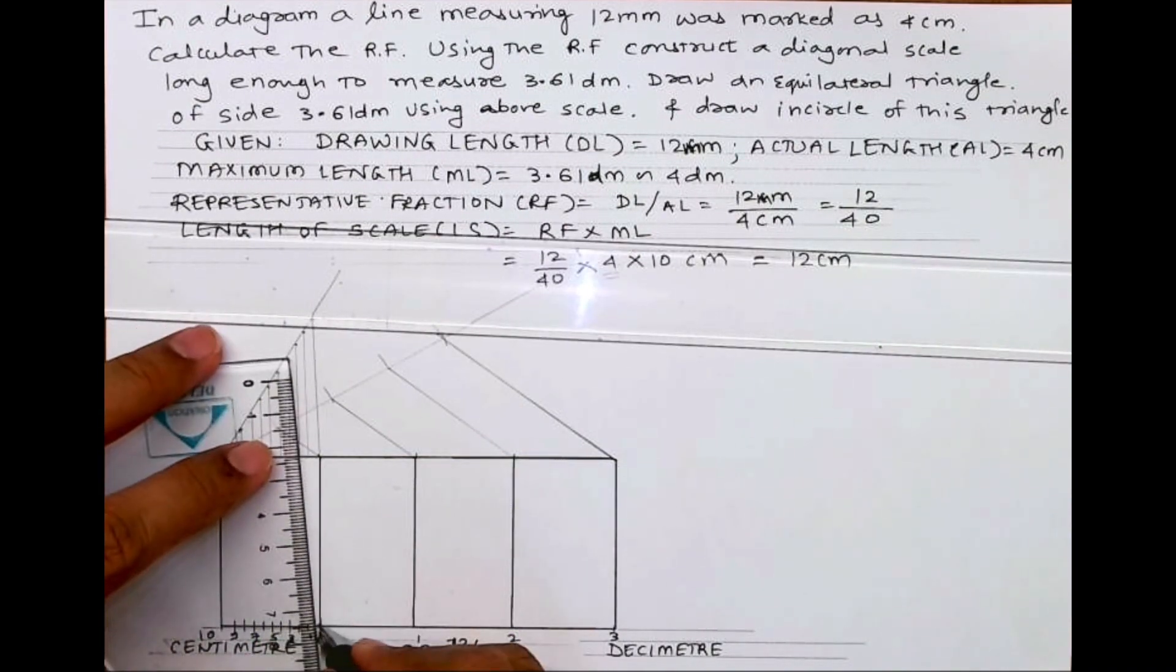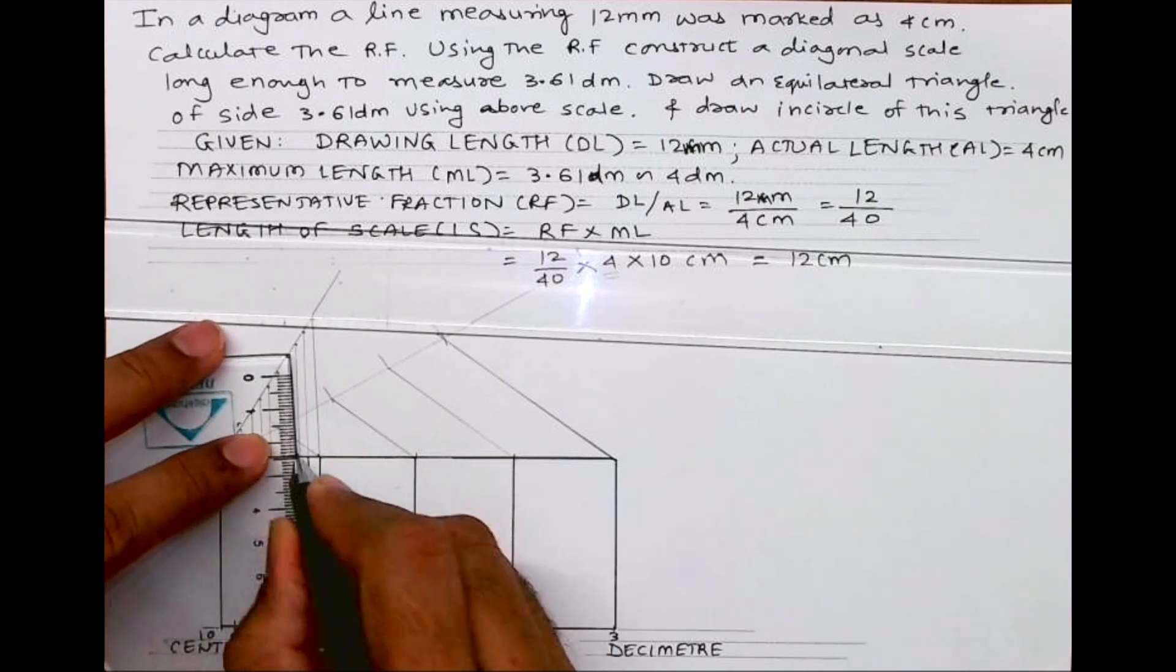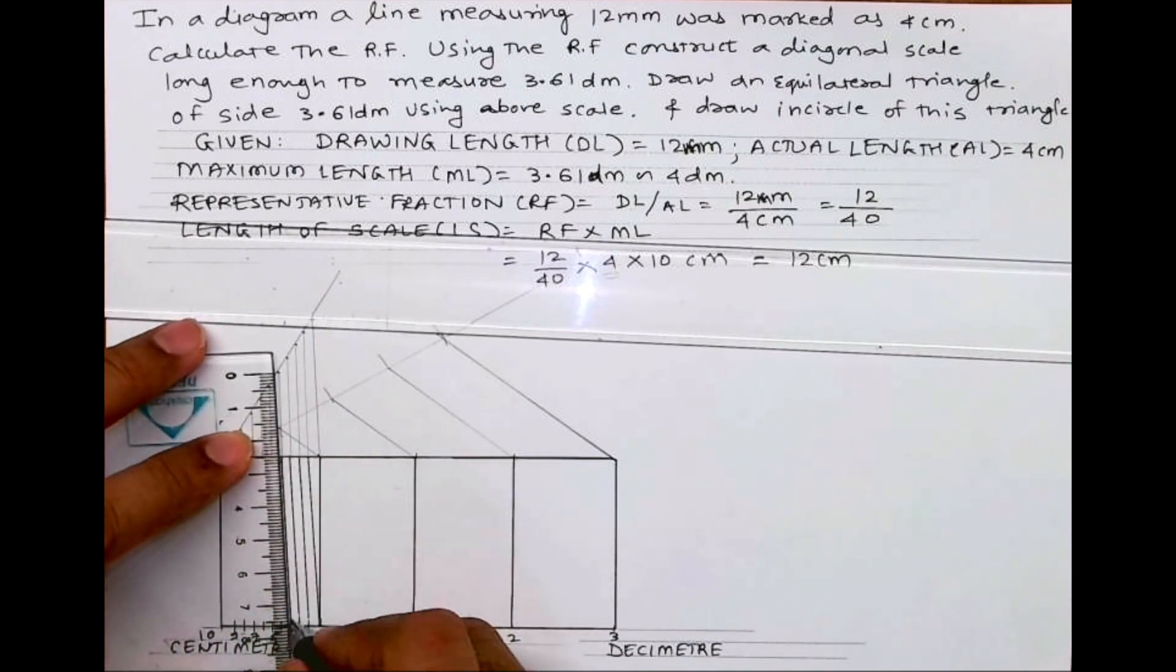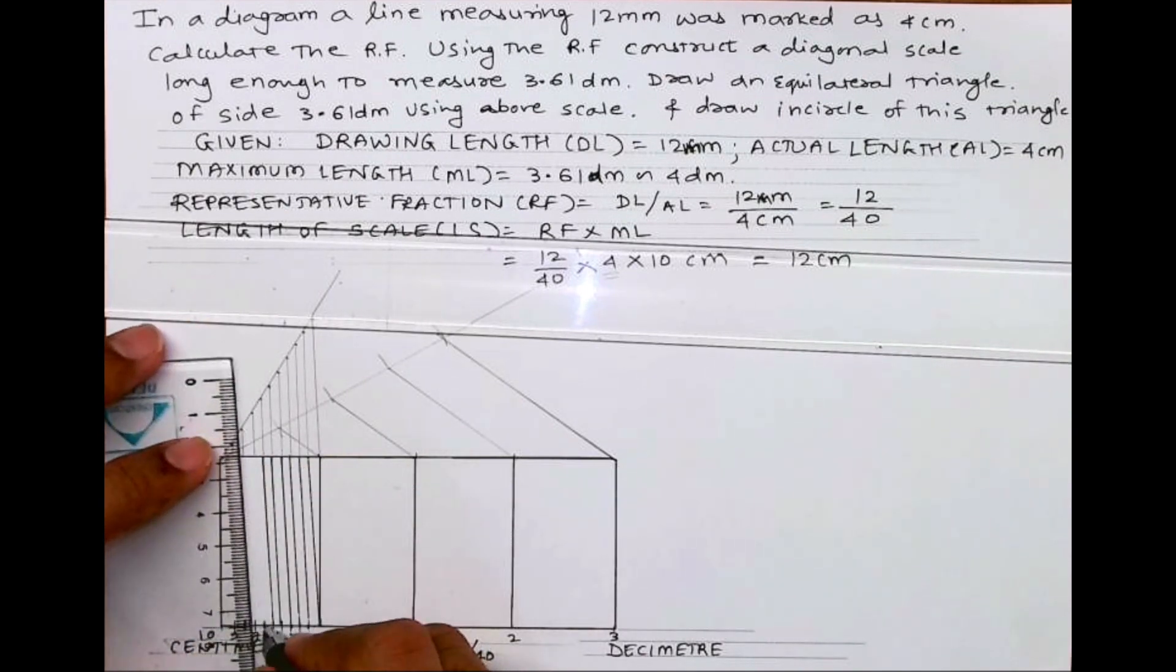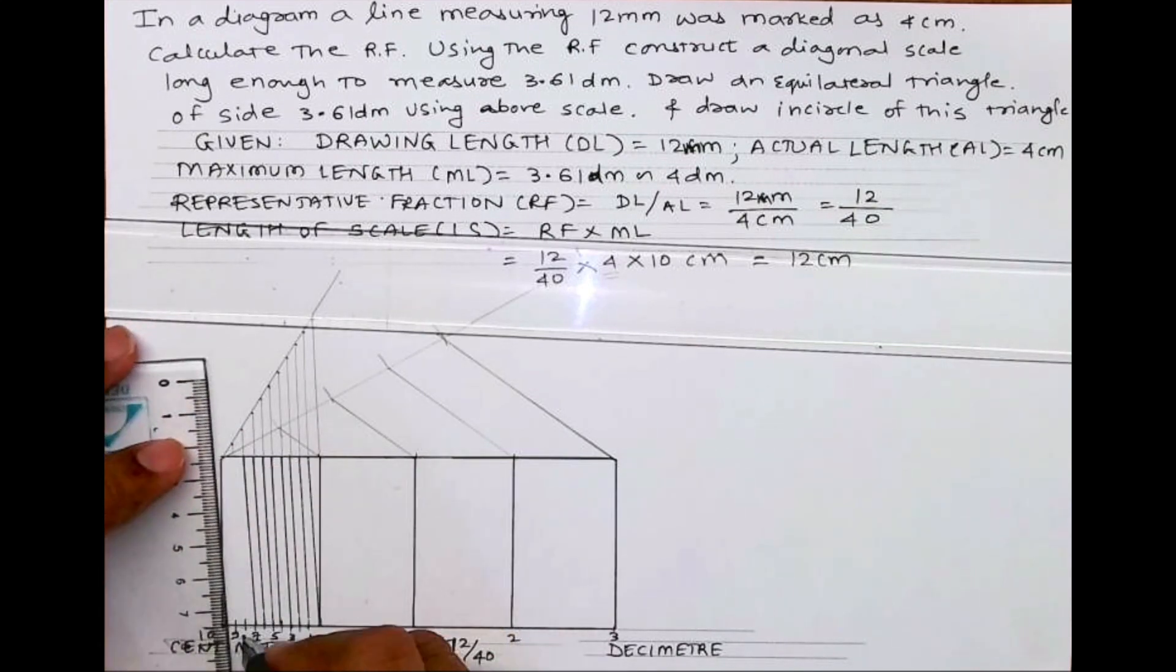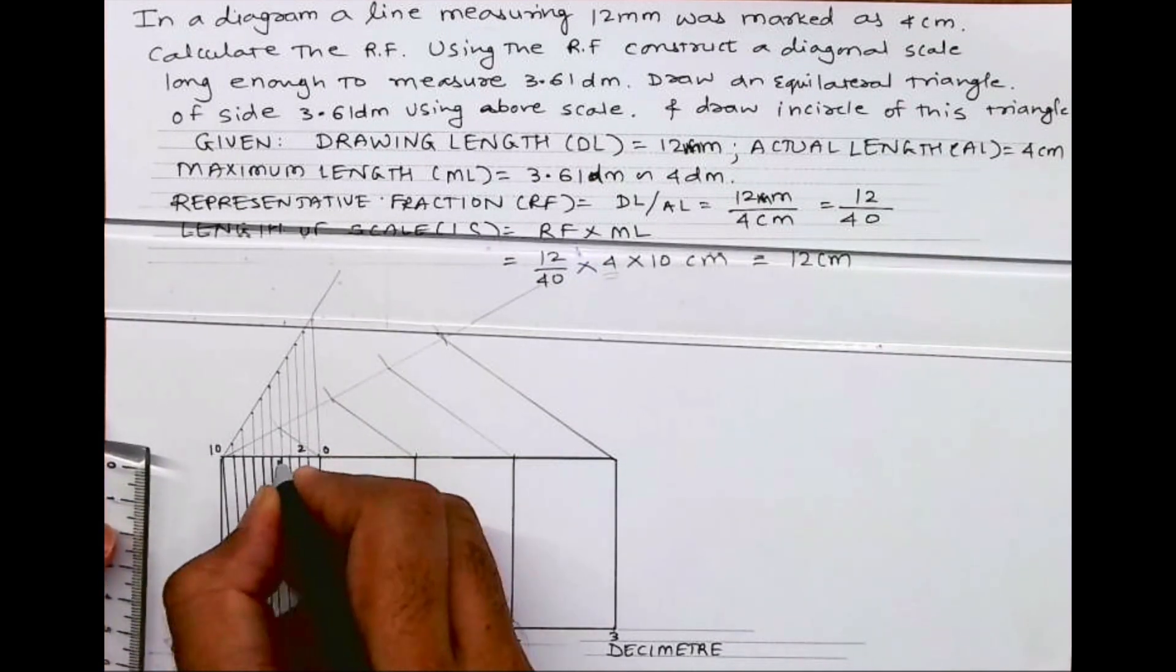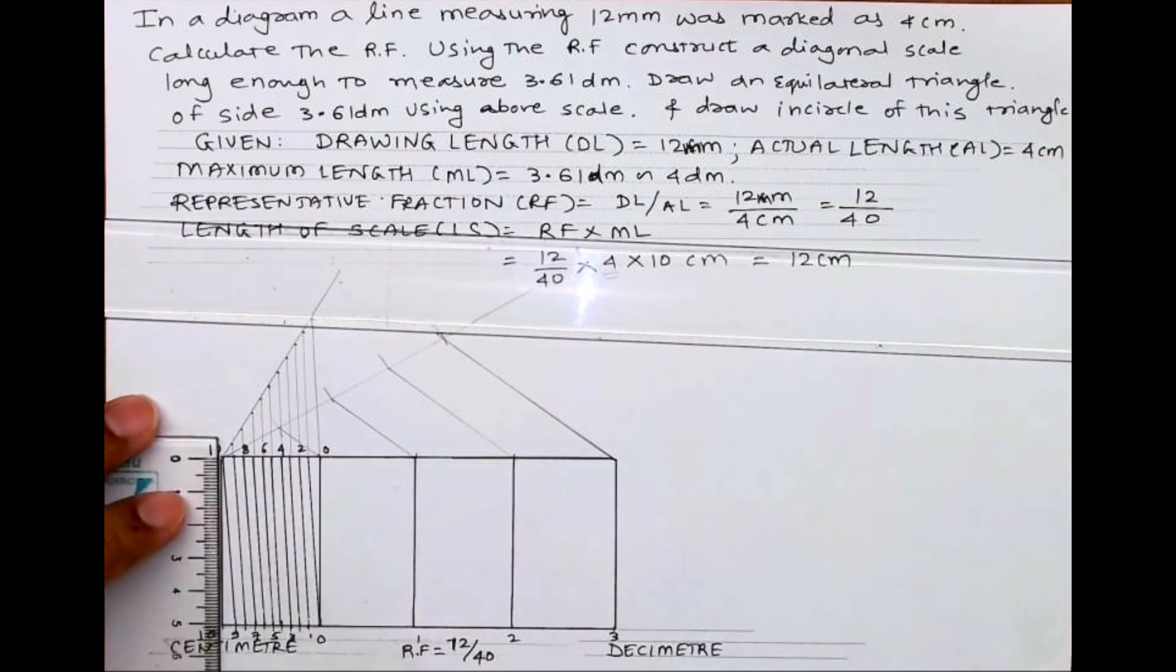Now we need to join zero to one, 1 to 2, 2 to 3, then 3 to 4, 4 to 5, 5 to 6, 6 to 7, 7 to 8, 8 to 9, 9 to 10. So we got 2, 4, 6, 8, and 10.